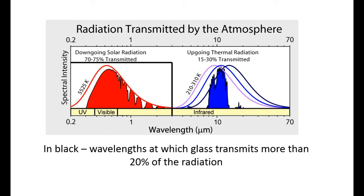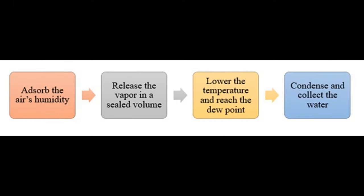Now that we understand the main physical concepts, we can look at previous designs that tackle the water harvesting problem. The main idea is to take air filled with water and lower its temperature to reach the dew point and condense the water. Sounds easy, right? Well, not so much. The amount of water in the air is pretty small — only about 25 grams per cubic meter. So the first challenge is collecting enough water vapor, and the second is cooling efficiently to reach the dew point, which can be very costly.